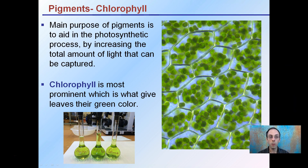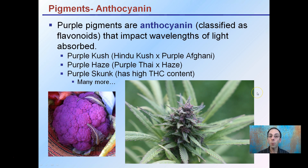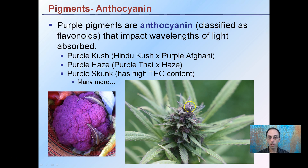Pigments are important — chlorophyll is one example. The main purpose of pigments is to aid in the photosynthetic process by increasing the total amount of light that can be captured. Chlorophyll is the most predominant pigment, giving leaves their green color, as seen here. Other pigments called anthocyanins are purple pigments classified as flavonoids that impact the wavelength of light absorbed. Strains like Purple Kush, Purple Haze, and Purple Skunk have increased amounts of anthocyanins, producing increased purple coloration, which can be seen in this maturing flower bud.